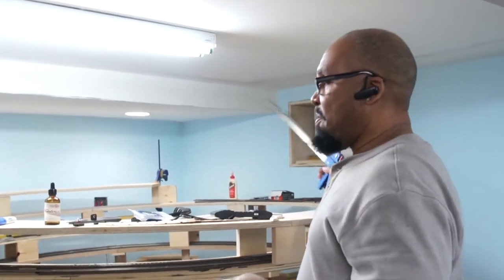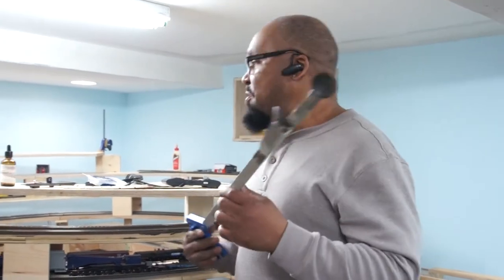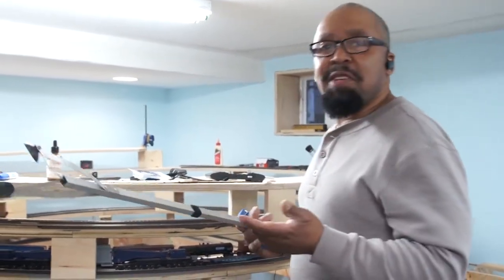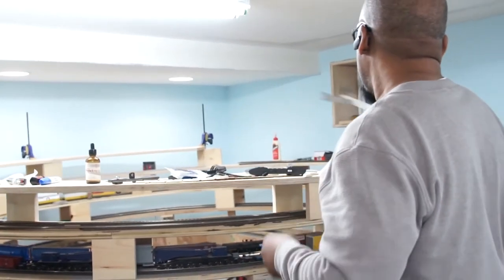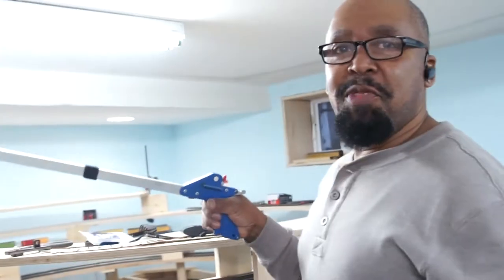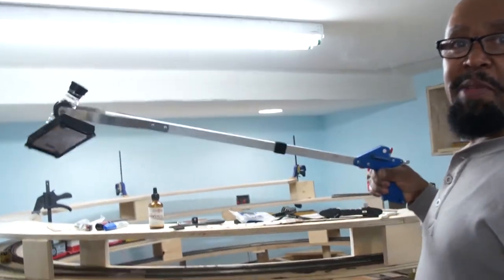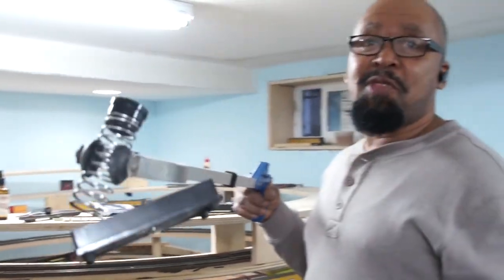Also what I use, which I call the Hands of Life. I think this comes in handy for every modeler to reach things that you can't reach. For example, I can reach stuff that was way over there that my human arm would not be able to reach, not unless I'm Stretch Armstrong.